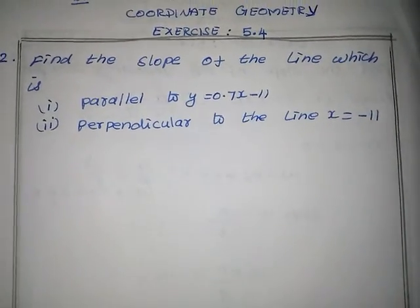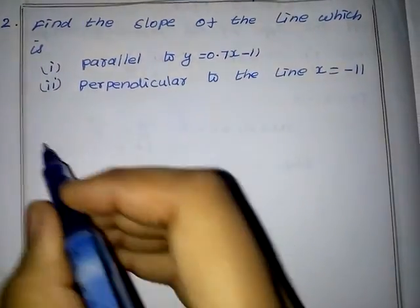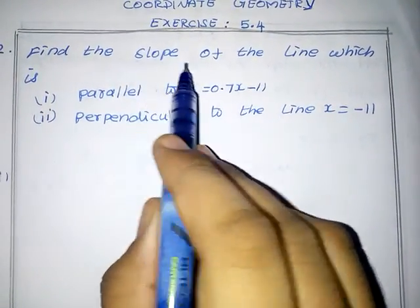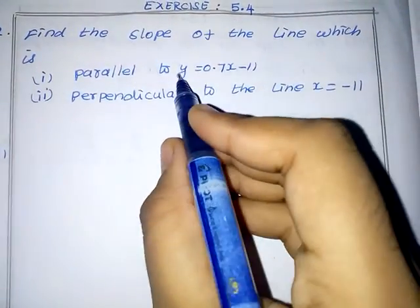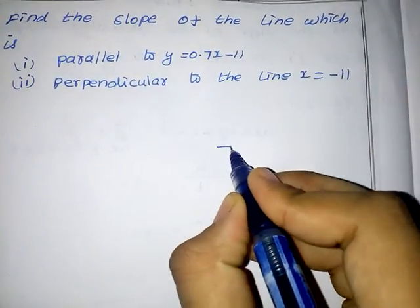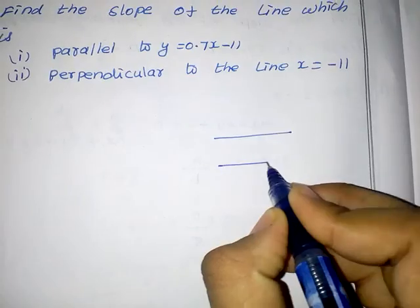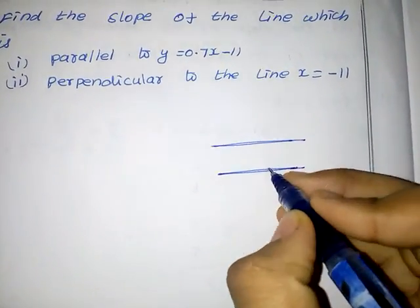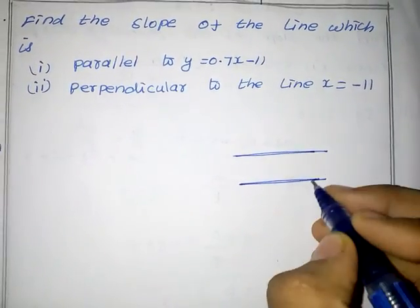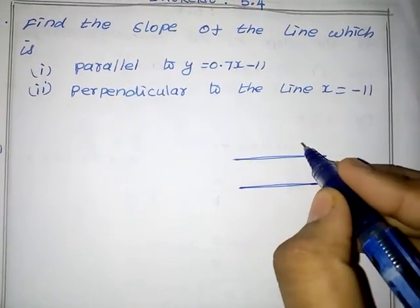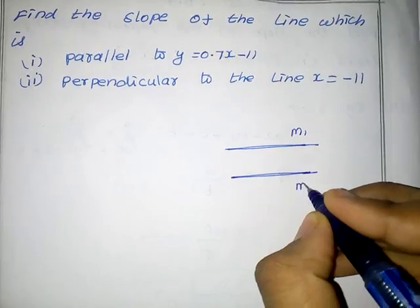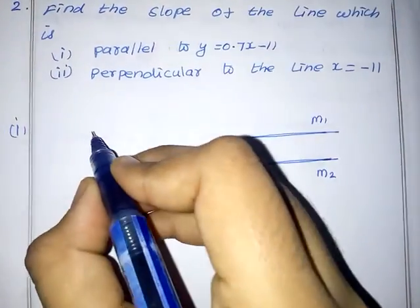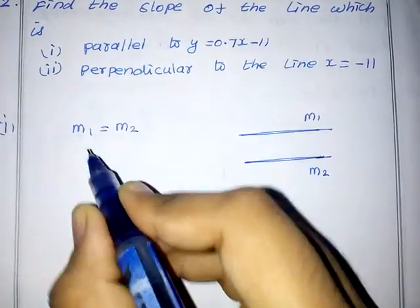We have the equation and we will see the slope of the line. Looking at the rough diagram, we will see two parallel lines. For parallel lines, the slopes are the same: M1 is equal to M2.